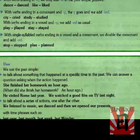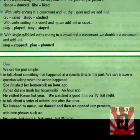With verbs ending in a vowel and Y, we add -ED as usual. For example: 'play' becomes 'played'; 'stay' becomes 'stayed'. Verbs ending in a vowel plus Y — such as A-Y — we add -ED as usual.